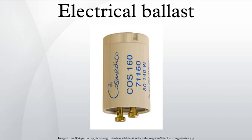An inductor is very common in line frequency ballasts to provide the proper starting and operating electrical conditions to power a fluorescent lamp, neon lamp, or high-intensity discharge lamp. The inductor has two benefits: its reactance limits the power available to the lamp with only minimal power losses, and the voltage spike produced when current through the inductor is rapidly interrupted is used in some circuits to first strike the arc in the lamp. A disadvantage is that current is shifted out of phase with the voltage, producing a poor power factor. In more expensive ballasts, a capacitor is often paired with the inductor to correct the power factor. In ballasts that control two or more lamps, line frequency ballasts commonly use different phase relationships between the multiple lamps, which mitigates flicker and helps maintain a high power factor.